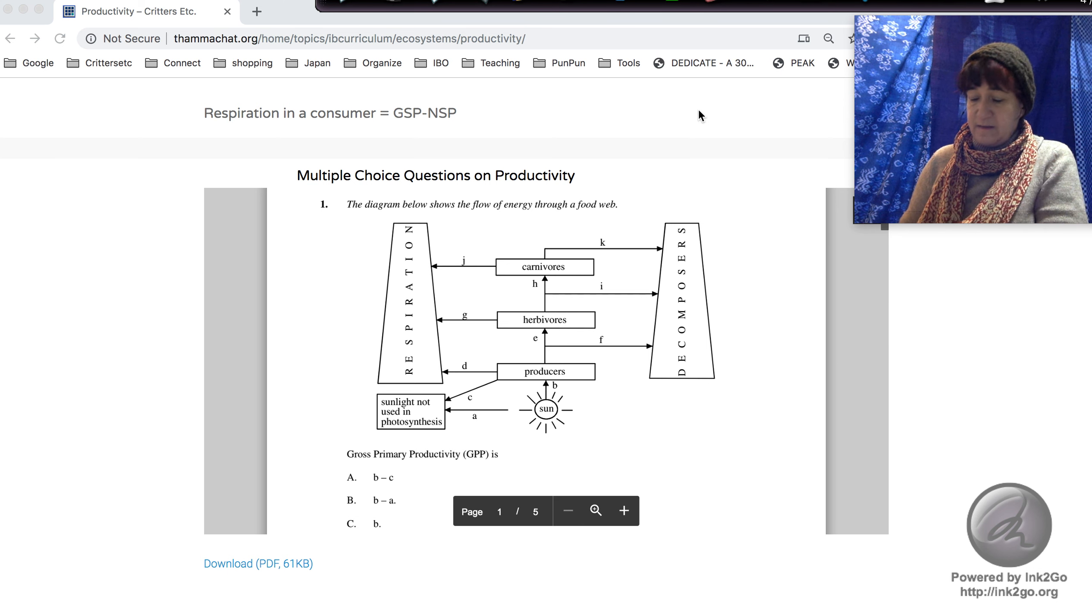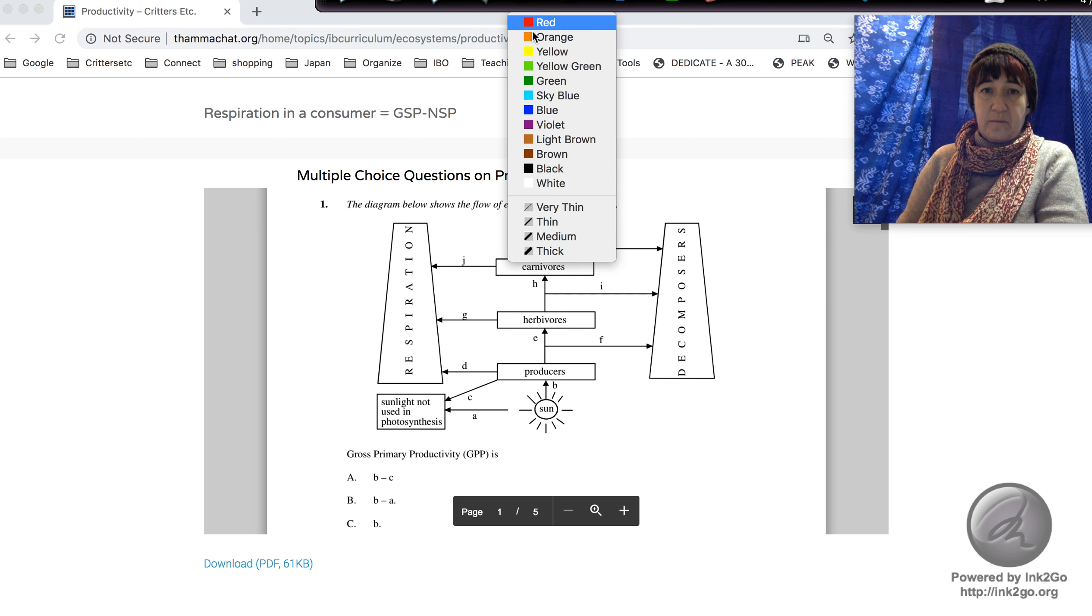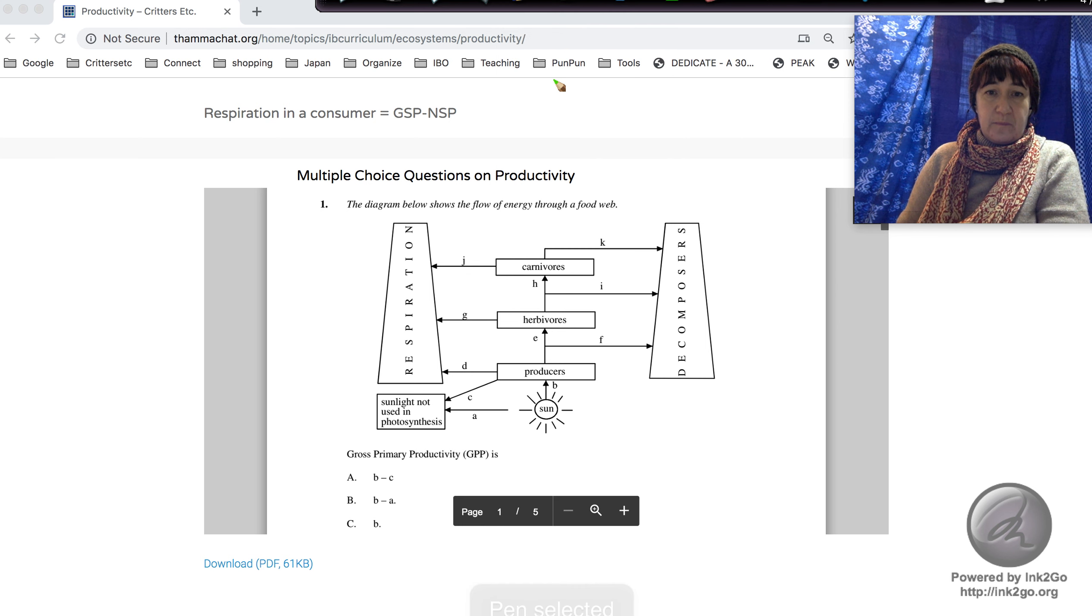Here's our system diagram of a food chain. We've got the sun coming in, and remember, not all of the sun reaches the plants, but some of it does.